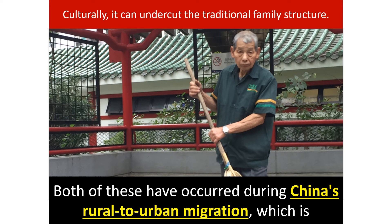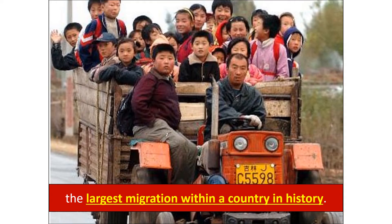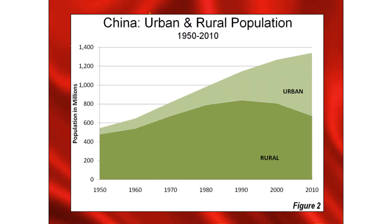Culturally, emigration can undercut the traditional family structure. Both effects have occurred during China's rural-to-urban migration, the largest migration within a single country in history. China's internal migration is not west to east — the population has always lived in the east — but rather from the rural east to the urban east, from farmland to city.